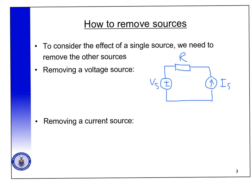To remove a voltage source we want the voltage to be 0 volts instead of Vs, because we're going to work out what the effect on that resistor is of just the current source Is. So how do we make the voltage 0 volts? Well we do it by simply replacing the voltage source with a short circuit, so we'll still have our resistor R and we still have our current source Is.